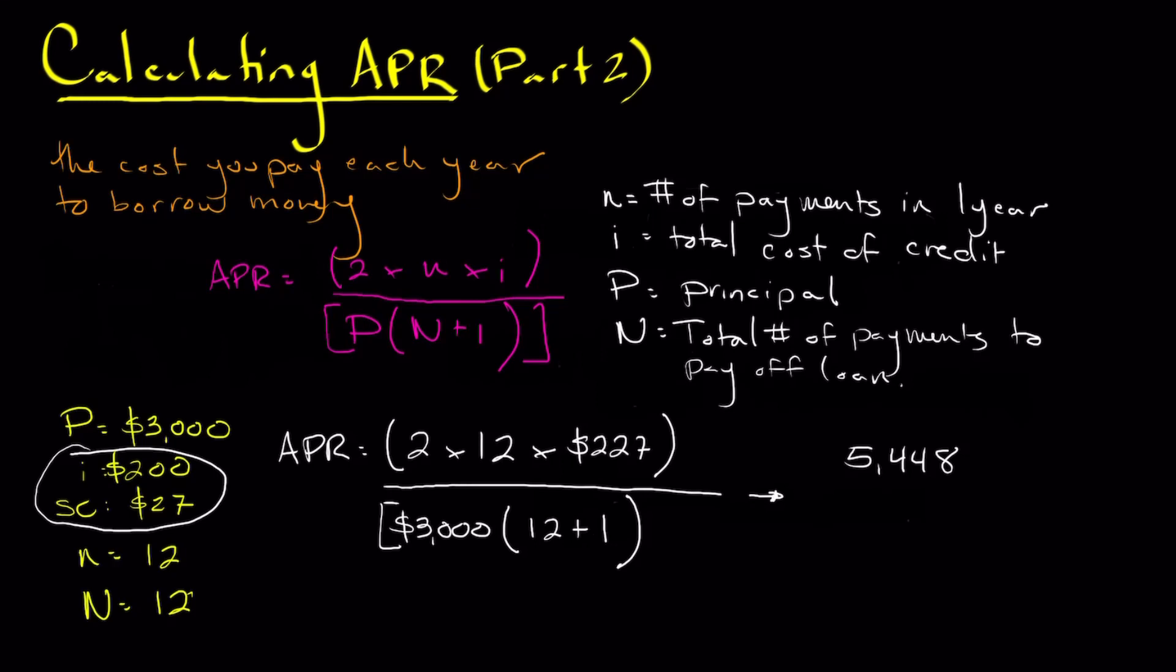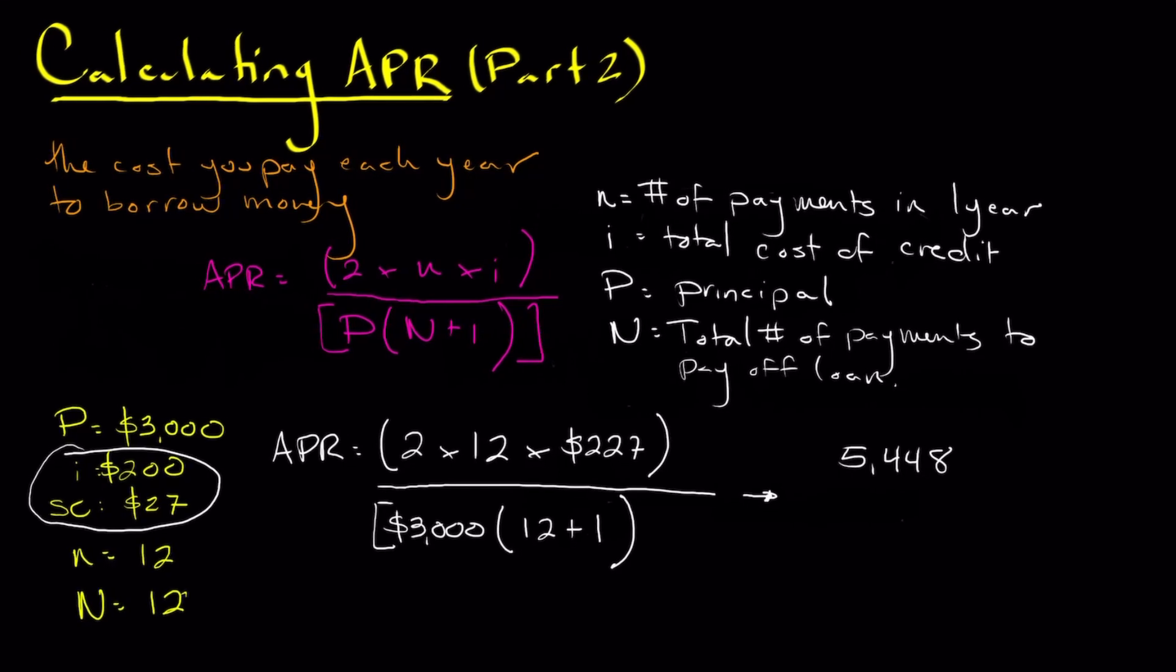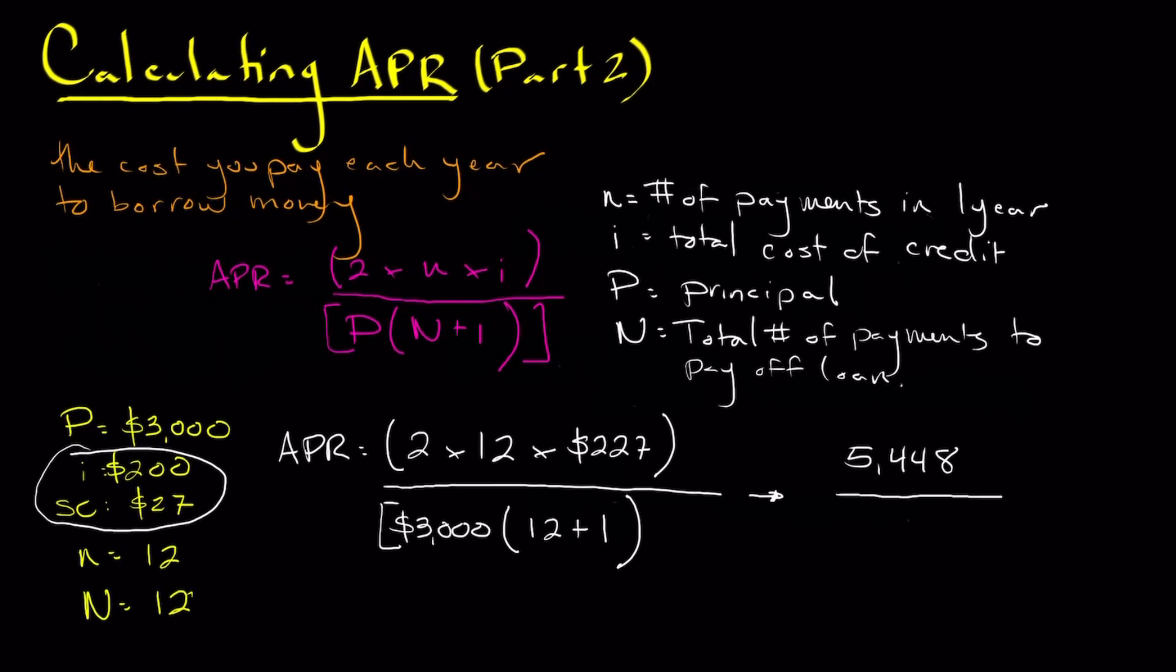And we're going to divide that by 3,000 multiplied by 13, or 12 plus 1 multiplied by 3,000. And that's going to give us 39,000.